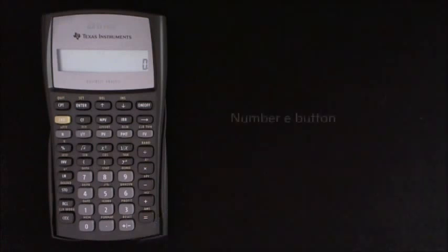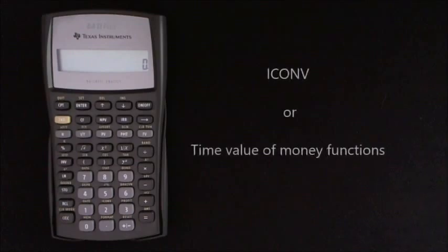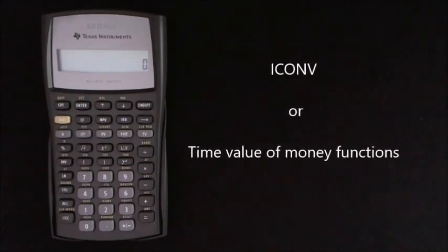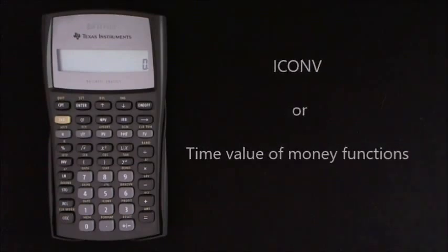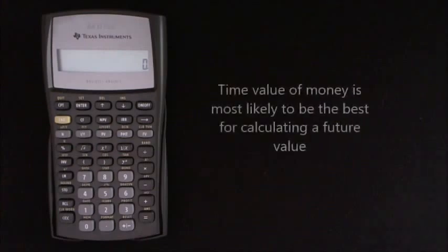The first and purest way from a mathematical point of view is by using the number E button. The other two ways are by using the ICONV or time value of money functions on this calculator. These are technically an approximation but they'll give you an answer close enough for most applications. The most appropriate option of the three will depend on which of the variables that you need to find.